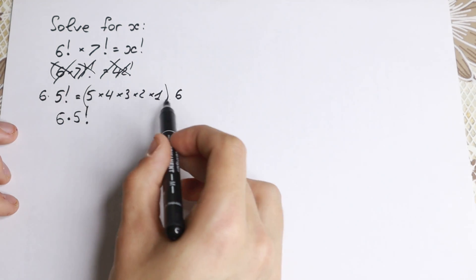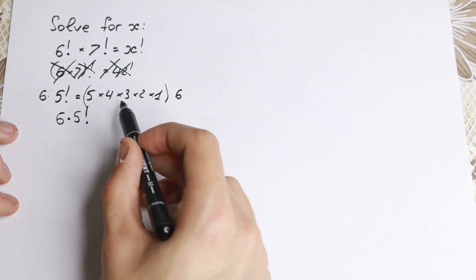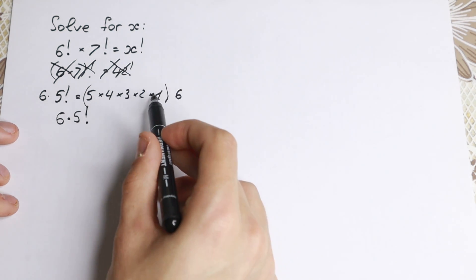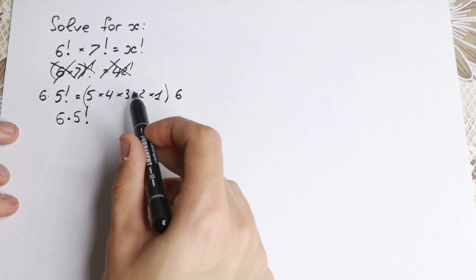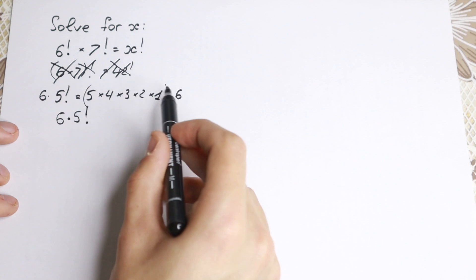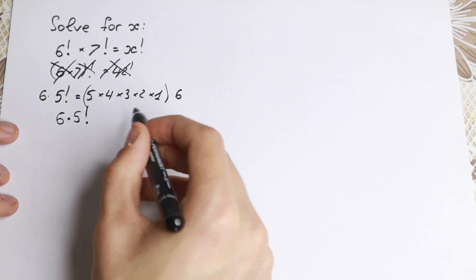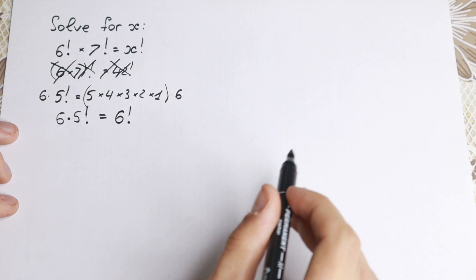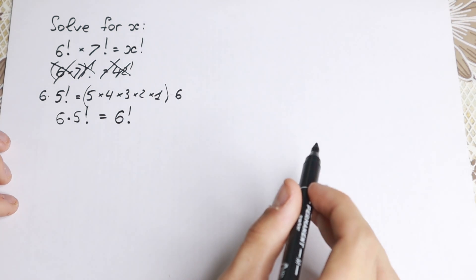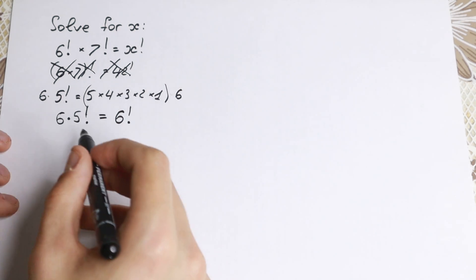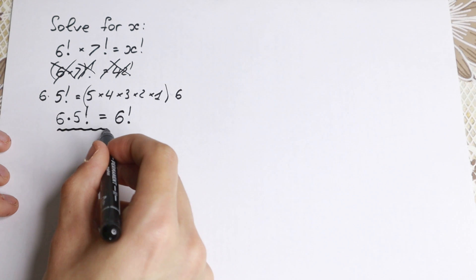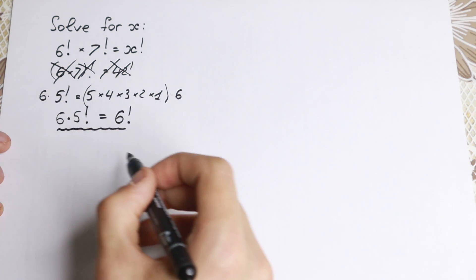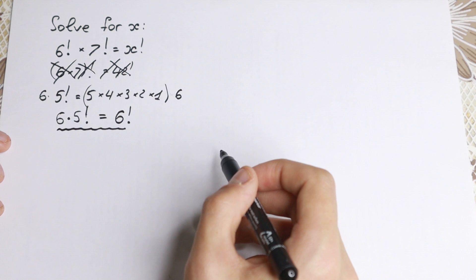On the right-hand side, we no longer have 5 factorial — we have 6 factorial, because we now have the product from 1 to 6. So the key result is: 6 times 5 factorial equals 6 factorial. This is the main identity we need to understand.